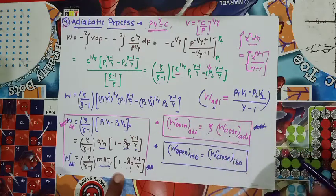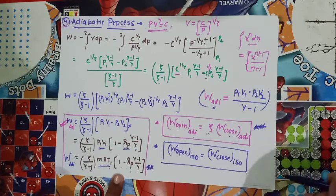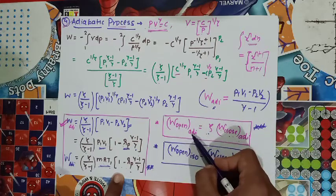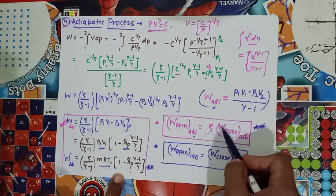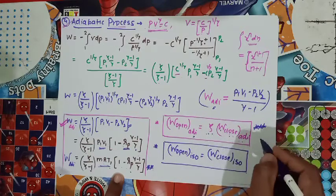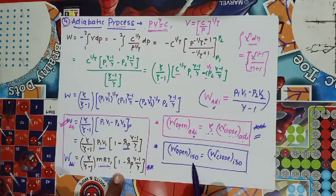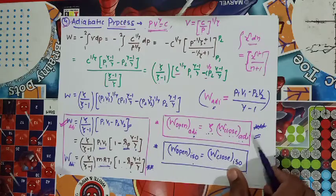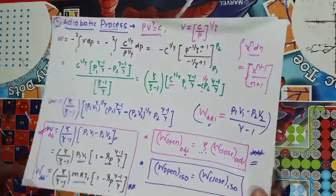Two key findings from this analysis: first, for an isothermal process, open work and closed work are the same; second, for an adiabatic process, open work is gamma times the closed work. These hold regardless of whether the system is open or closed.